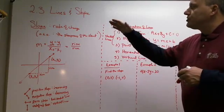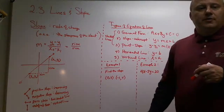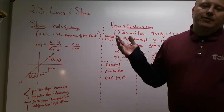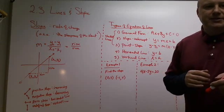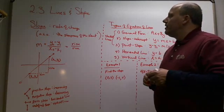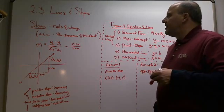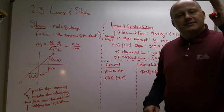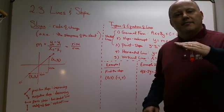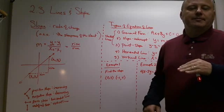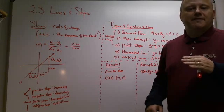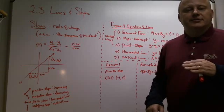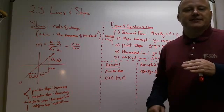Slope is discussing the rate of change of a line — that's what we're talking about here. It's also known as the steepness of the slant. The steeper it is, the higher the slope is going to be. So a slope of 5 is going to be steeper than a slope of 2.